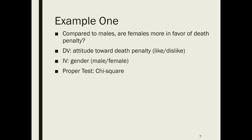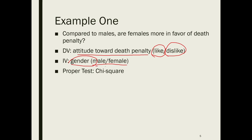Let's go through some examples. The first example asks: compared to males, are females more in favor of the death penalty? Here, the dependent variable will be attitude toward death penalty — in favor or not in favor. The independent variable will be gender, coded as male and female. Both are nominal variables, so the proper test is chi-square.